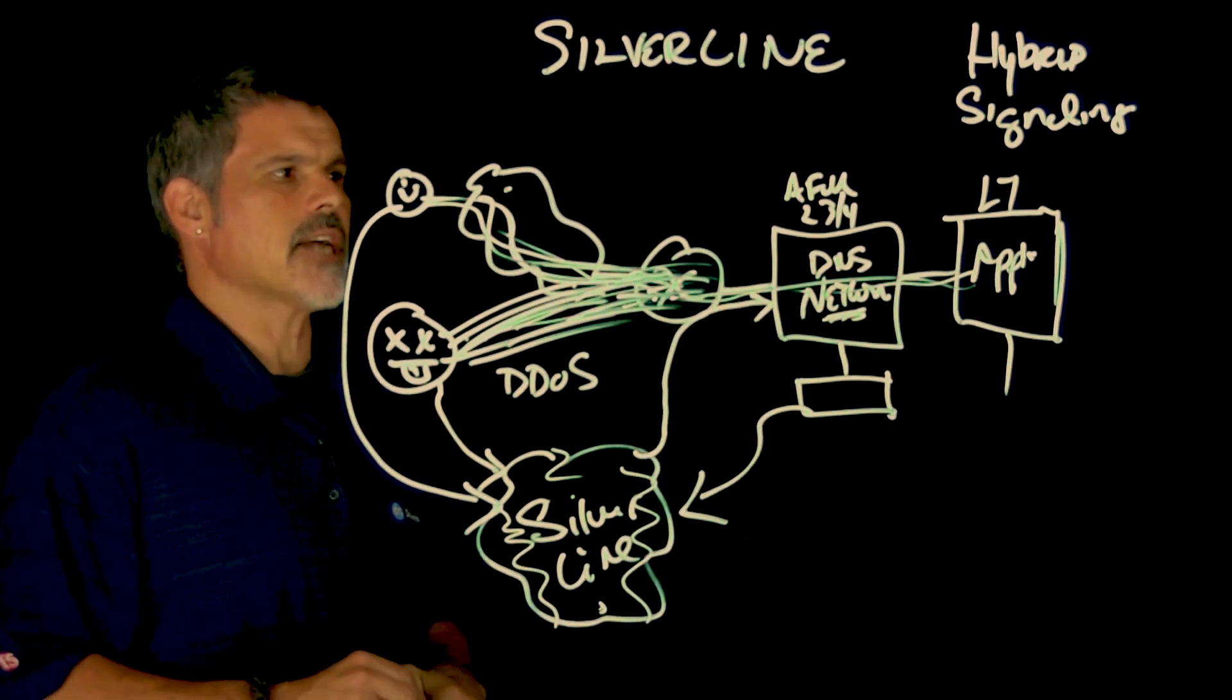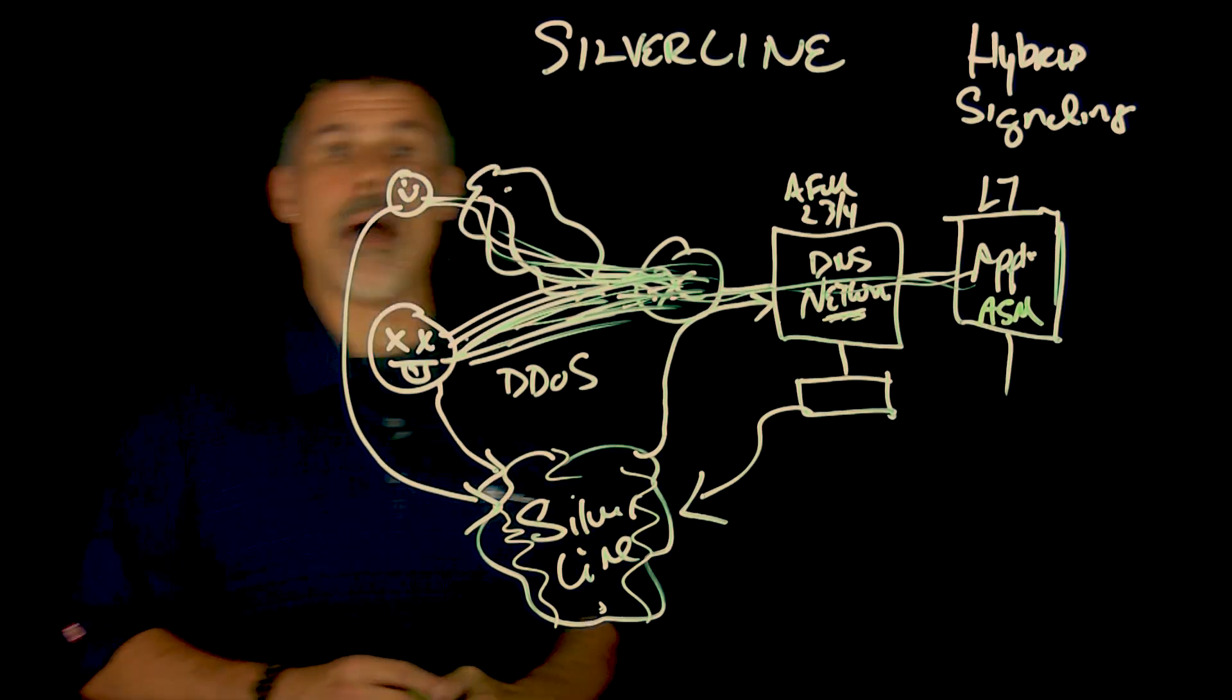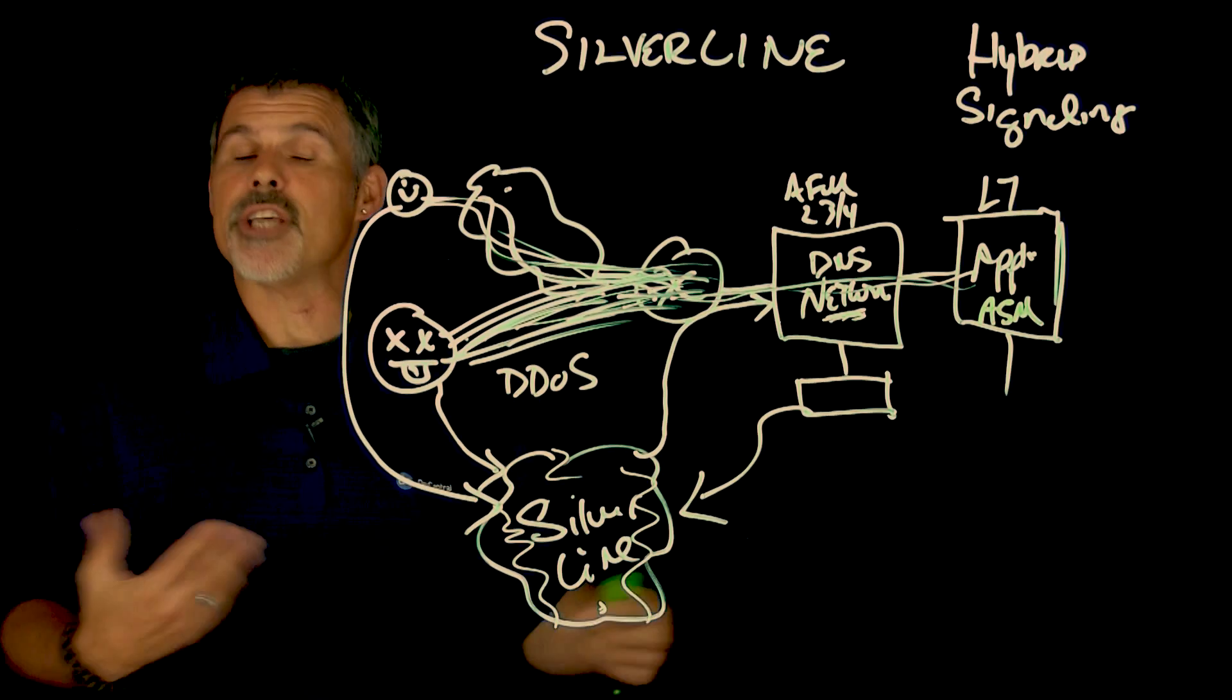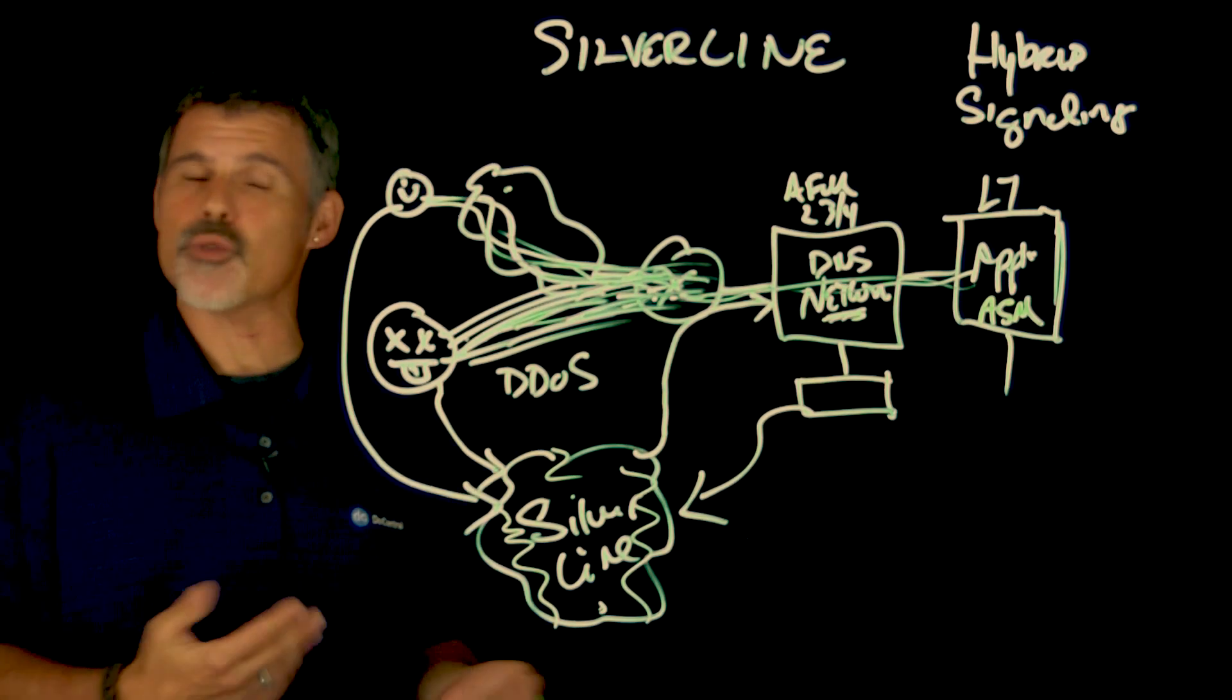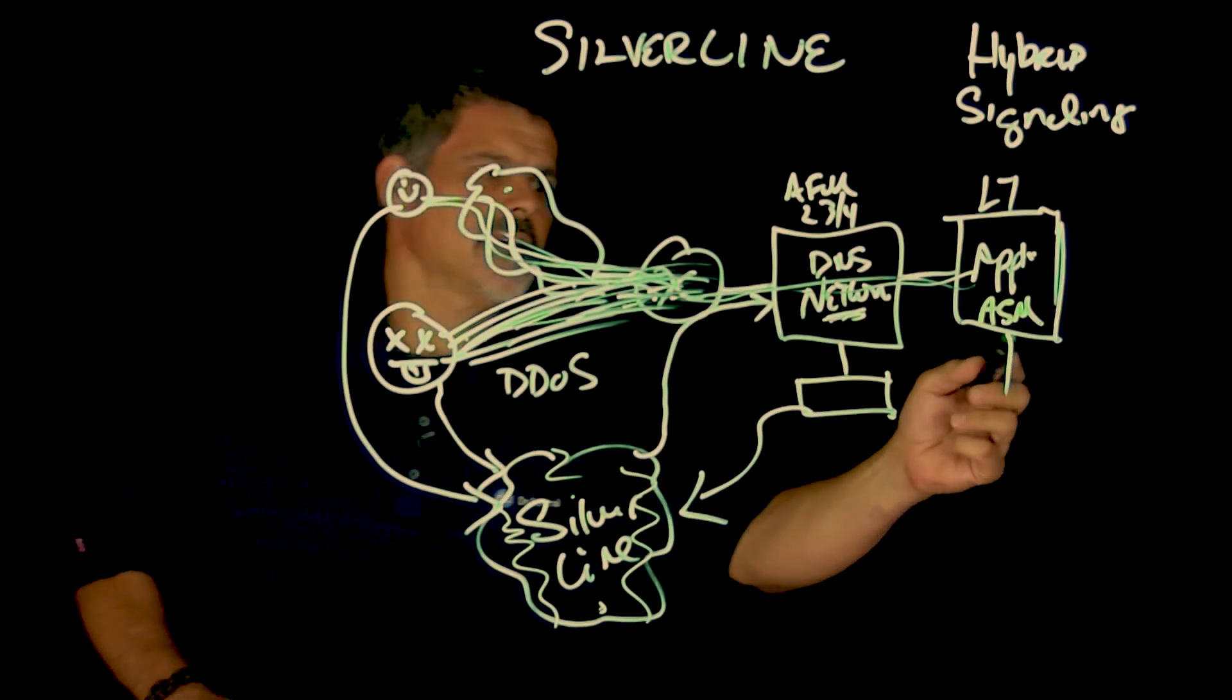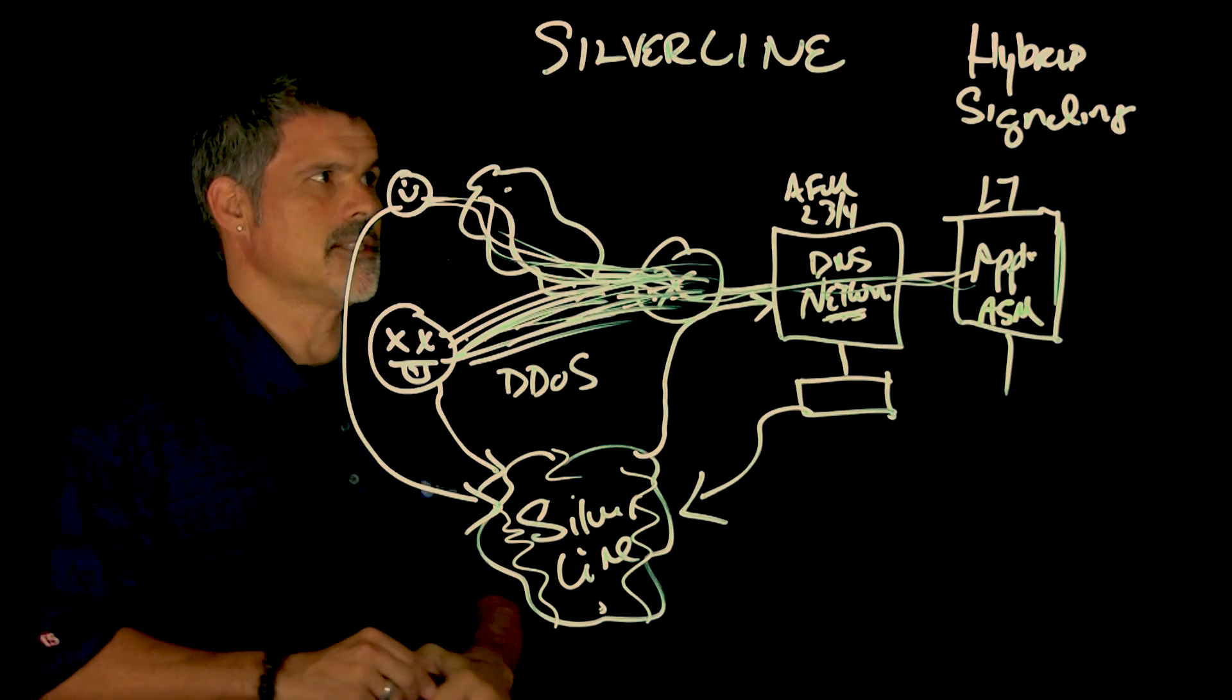And then the layer seven attacks, you would need ASM, the web application firewall. And so that would take care of things like SQL injections, or bad actors, known bad IP address ranges, that type of stuff to then protect against the layer seven type attacks.